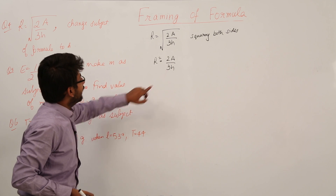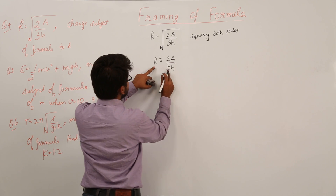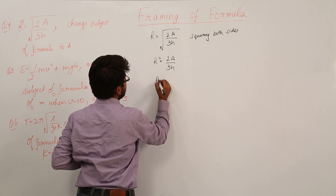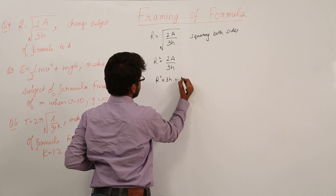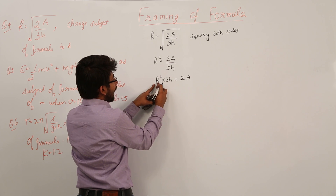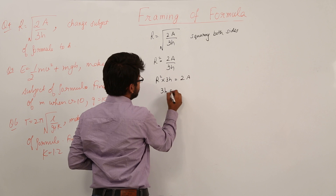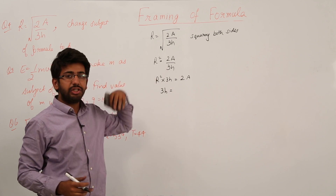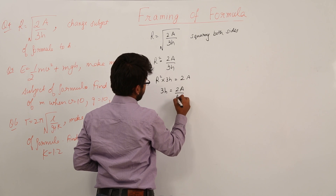Now we have to keep h on one side, so let us take 3h to the other side. We have r squared into 3h equals 2a. Now take r squared to the other side of the equality sign — since it is in multiplication, it goes to the denominator.